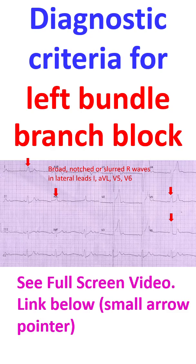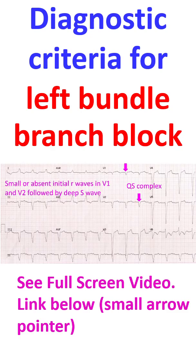Broad, notched or slurred R waves are seen in lateral leads I, aVL, V5, and V6. Small or absent initial R waves in V1 and V2 are followed by a deep S wave. If the initial R is absent, then it is a QS complex without any subsequent R wave after the Q.